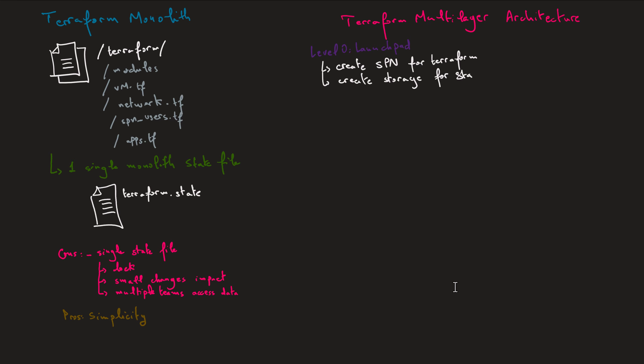Our first level is level zero, which is before starting to create Terraform infrastructure. I need to provide the infra for Terraform itself — install Terraform, install the first build agent for DevOps pipelines, and create the SPN for Terraform. For the first time, I will not use Terraform to create that SPN; maybe I need to create it manually. This makes the transition from manual into automated processes using Terraform. I also need to create the storage account for the state file and maybe create subscriptions for each team. All of these could be done manually — that is level zero.